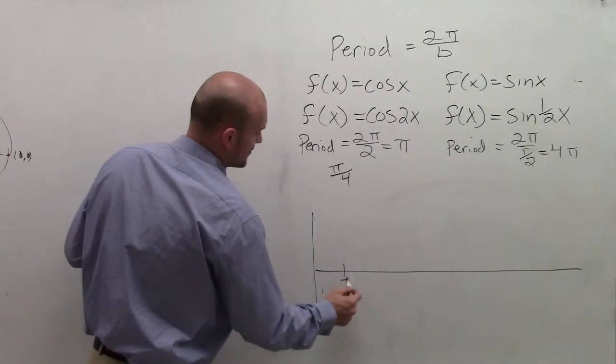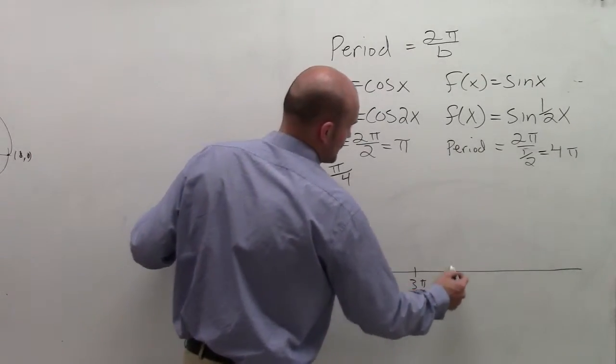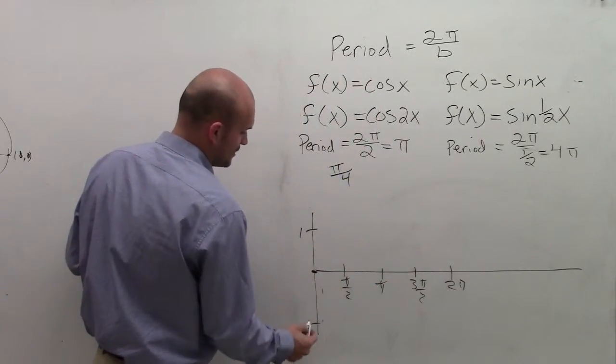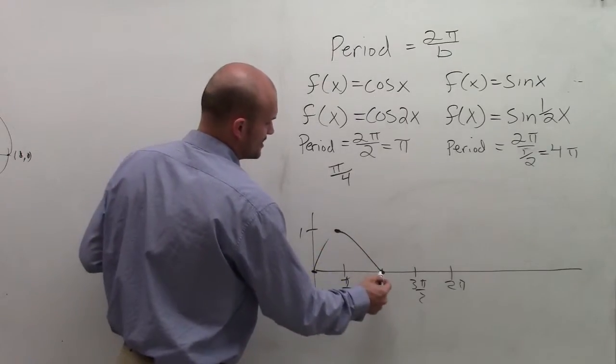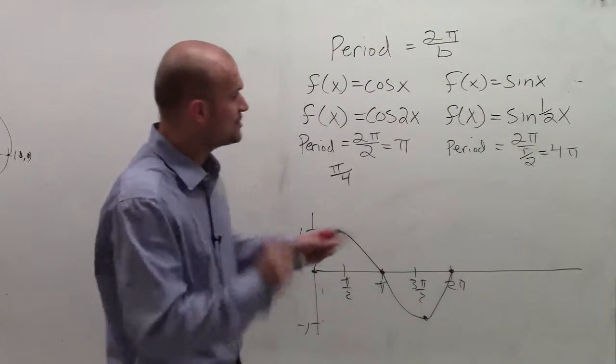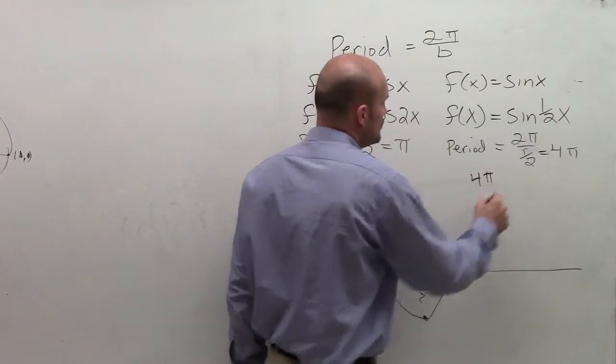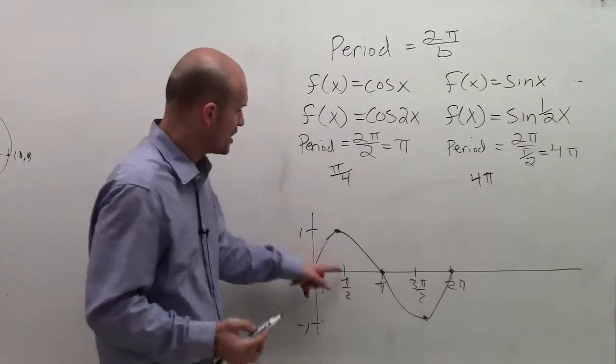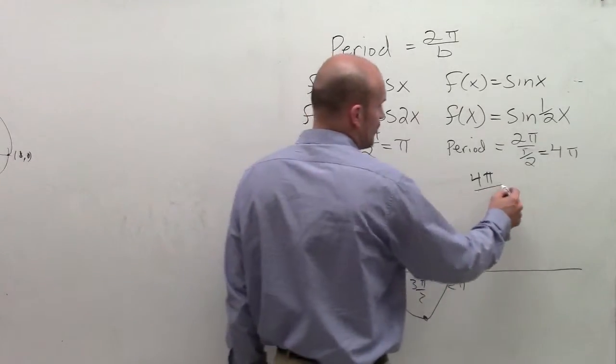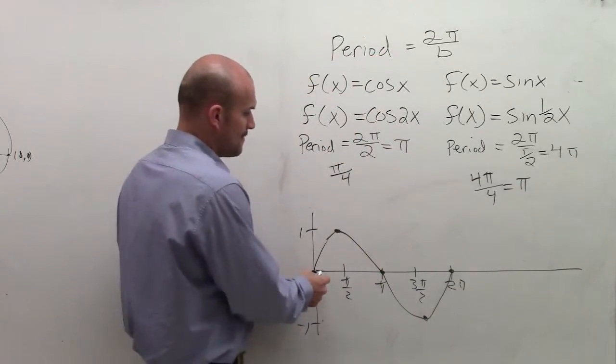So at pi over 2, pi, 3 pi over 2, and at 2 pi. So it goes up to 1 and goes down to negative 1. It goes up to 1, crosses at pi, goes down to negative 1, and then crosses at 2 pi. However, now what you notice is my period is now 4 pi. So what I can do to find my new critical points, because remember, our critical points are our maximum, our x-intercept, our minimum, and our x-intercept. So what I can do is I take 4 pi, divide it by 4, I get pi. That means my new critical points are at pi.